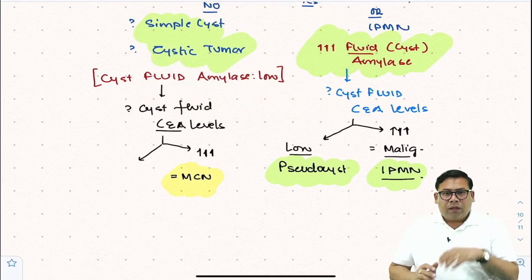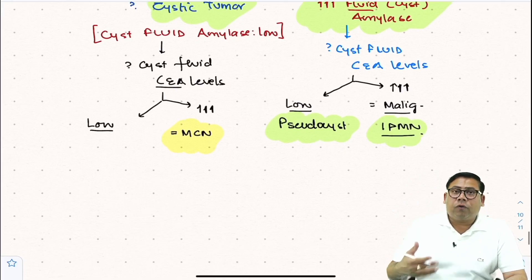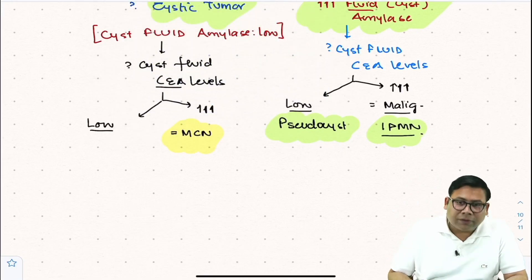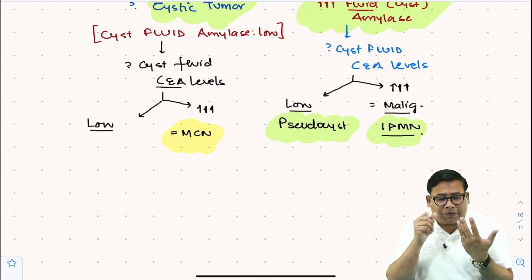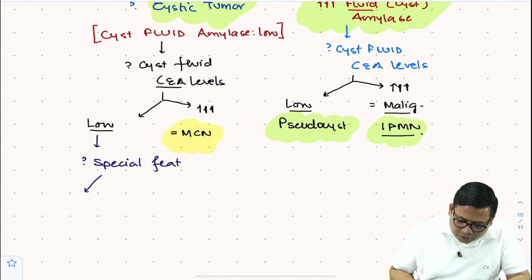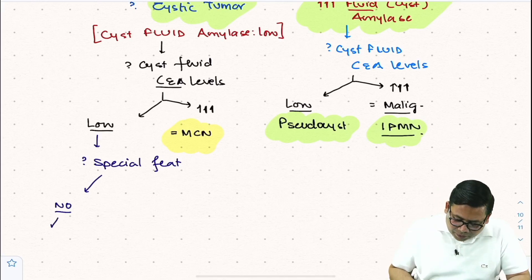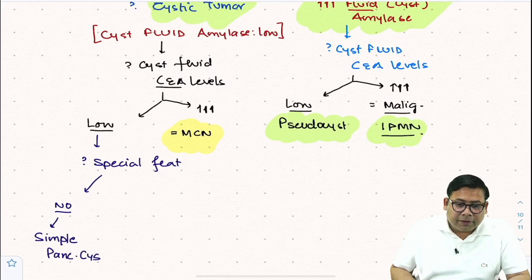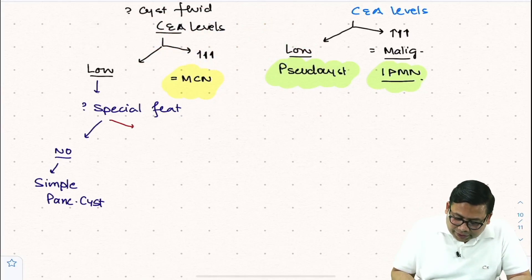Now suppose both cyst fluid amylase levels and cyst fluid CEA levels are low. You need to test for certain additional conditions. It could be a simple cyst or a serous cystic neoplasm. If there are no special features — neither elevated CEA nor elevated amylase — then the diagnosis is a simple pancreatic cyst.